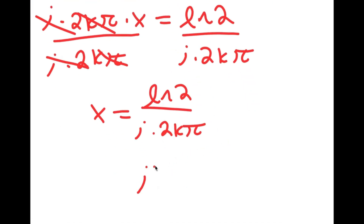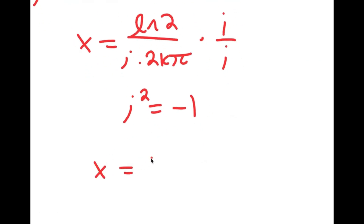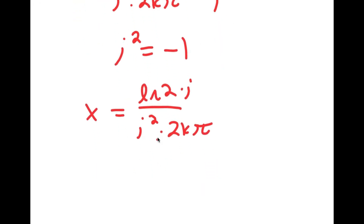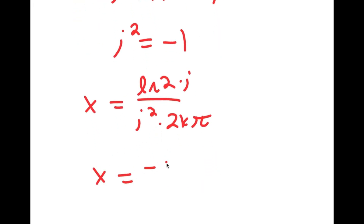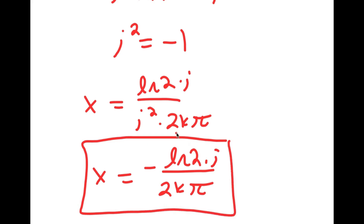Now, i squared is equal to negative 1. So I'm going to multiply both sides by i. I get x is equal to ln 2 times i over i squared times 2k pi. And since i squared equals negative 1, I get x is equal to negative ln 2 times i over 2k pi. So this is my final answer to this equation.